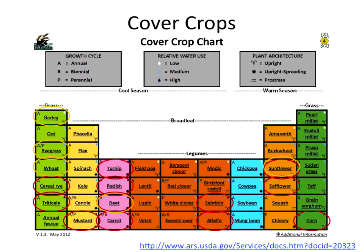A useful tool is the cover crops chart from the Mandan ARS. More salt-tolerant cover crops include barley, ryegrass, wheat, beets, and sunflowers. Higher water-use cover crops include cereal rye, triticale, mustard, carrots, beets, radishes, turnips, sainfoin, alfalfa, sunflower, safflower, and corn.